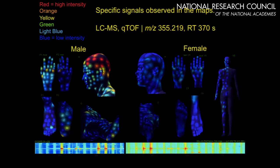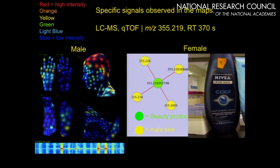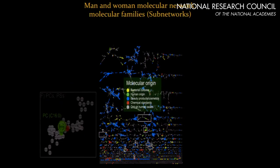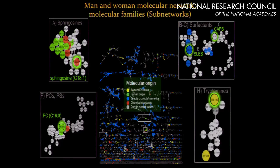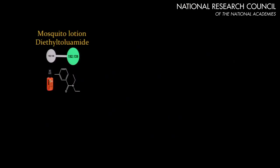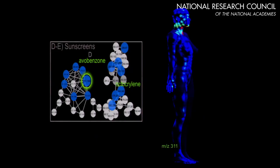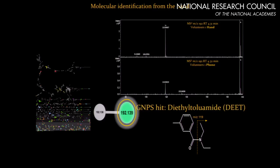Here's what this looks like — a map for both individuals we were just looking at. For example, here's a molecule on the head of the male that you don't see on the female at all. Going to the network, you quickly identify that it's an MSMS spectrum also found in a particular beauty product — Nivea for Men. We can also see lipids, surfactants commonly found in personal care products, human or microbially-derived molecules, mosquito lotions, antiseptics, and sunscreens.